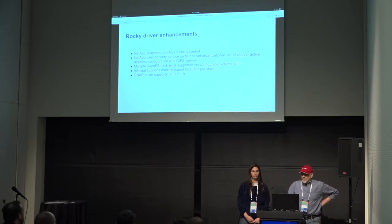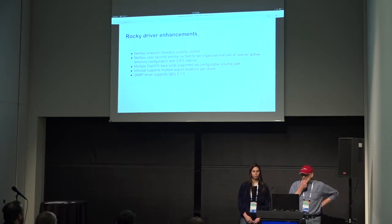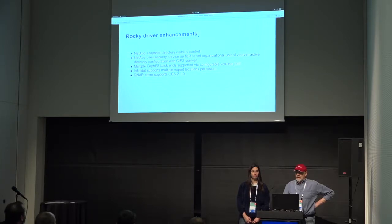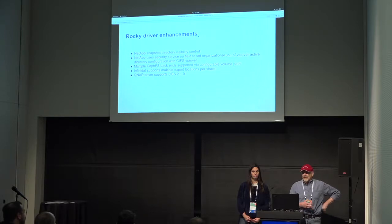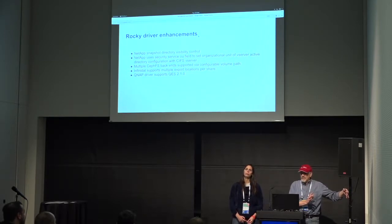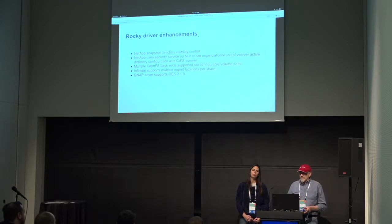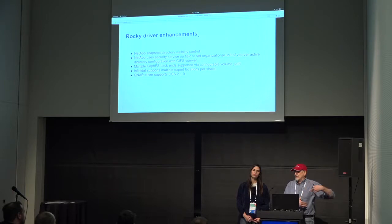We have the idea of security services. With CIFS and NetApp, you can now set the OU when you couldn't before. With the CephFS backends, there's a volume path in the file system that used to just be hardcoded — now we can configure it. That means we can run multiple CephFS backends, so you can have CephFS backends one, two, and three and so on, using the same file system behind it.